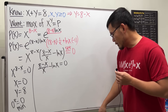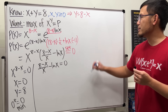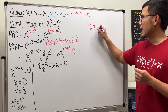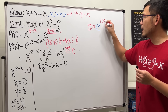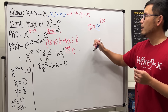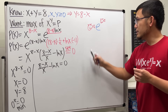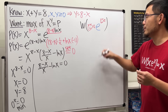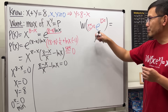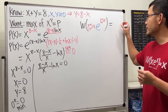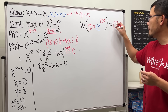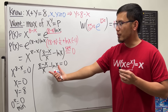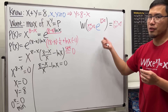Let me remind you what this is about. The idea is that if you have a 'fish' times e to the 'fish' power, and those two 'fish' expressions are the same, then if you take the Lambert W function, you will get the 'fish' back. So our goal is to first write the equation into this kind of form.